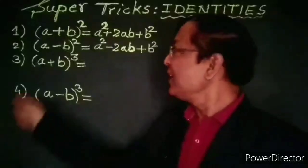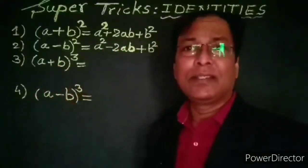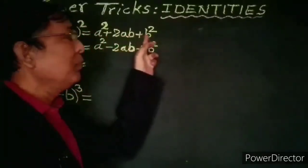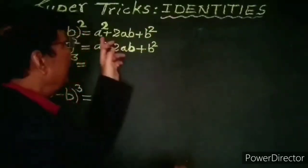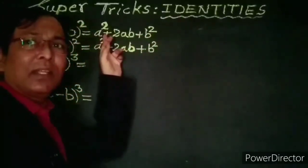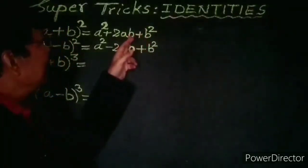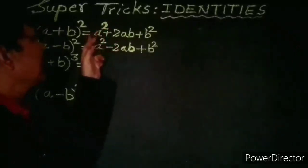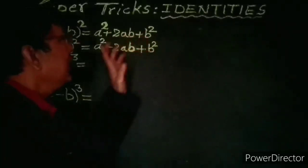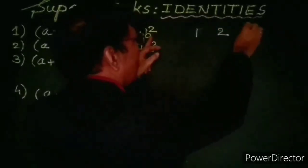If we remember the first identity, (a+b)² = a² + 2ab + b², we can easily develop the higher identities. Here we have to write the coefficients of the a and b terms. The coefficient is the number associated with a or b — the number written to the left side. The coefficient of a² is 1, the coefficient of ab is 2, and the coefficient of b² is 1.